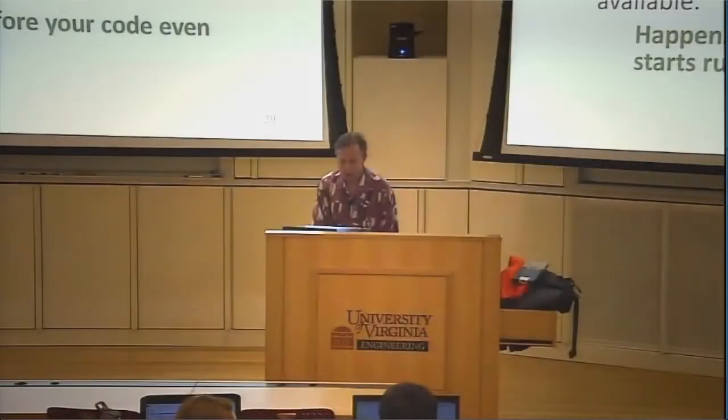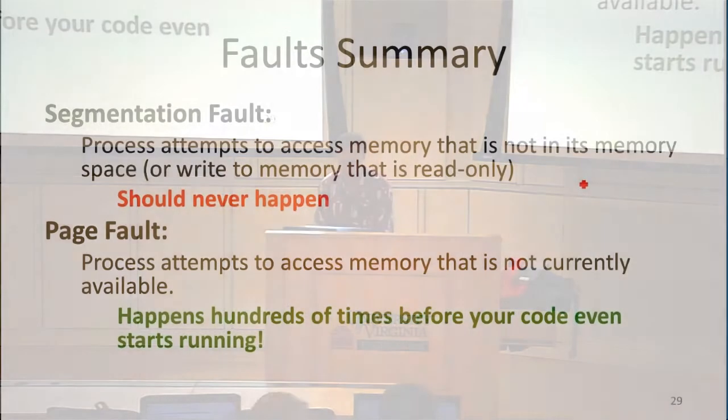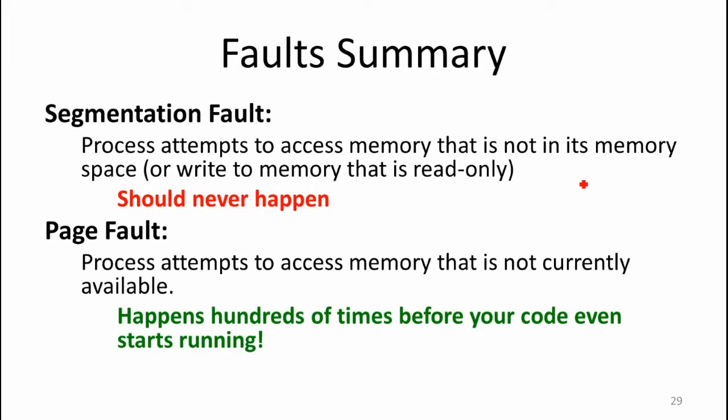To summarize the two kinds of faults we've talked about: segmentation faults should never happen. If they happen in a C, C++, or assembly program you're writing, that probably means it's a bug in your code. If they happen in a Rust or Java program, that means there's a bug in the compiler or runtime system. They should never happen.